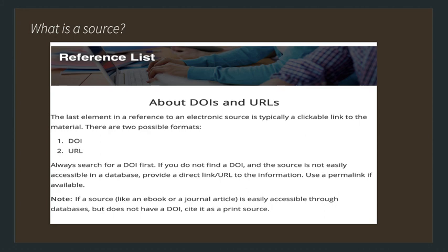Now, sources can have either a DOI or a URL. A DOI is found on documents often in the library's databases and is used to keep track of documents — similar to how books have letters and numbers for easy location. The URL is from the internet. When looking for articles in the library databases, check to see if there is a DOI number, because you'll need that at the end of your reference. If there's no DOI, then use the URL.